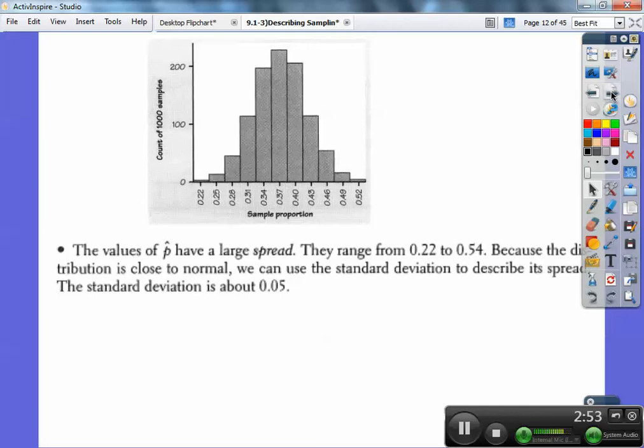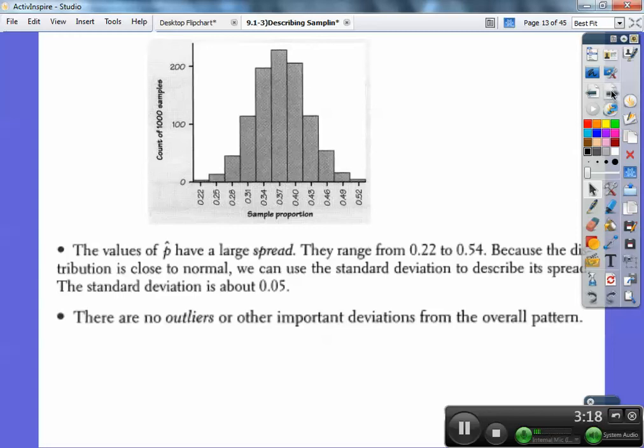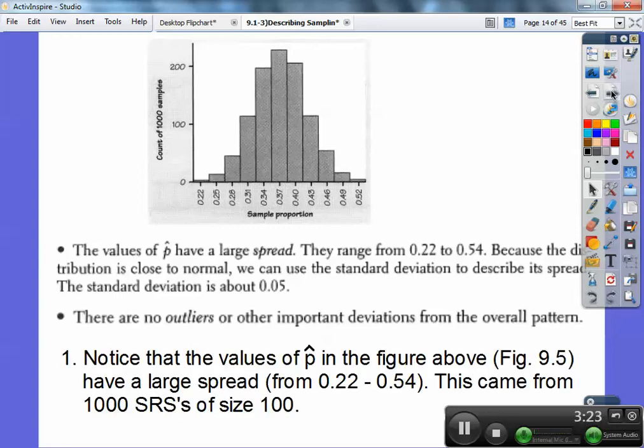The values of the sample proportions, that's what P hat is, have a large spread. They range from 22% all the way up to 54%. Because the distribution is close to normal, we can use the standard deviation to describe its spread. The standard deviation is about 0.05. We're going to use that number in just a little bit.